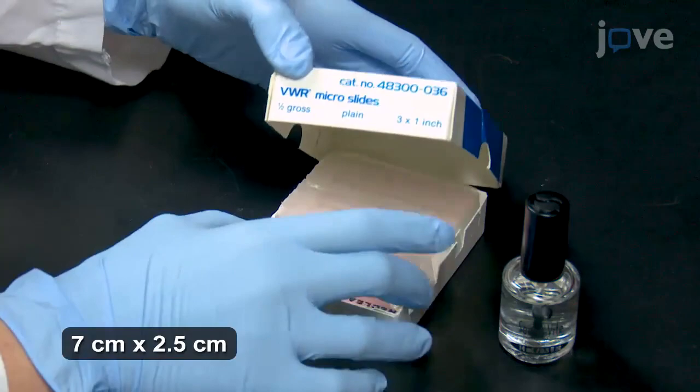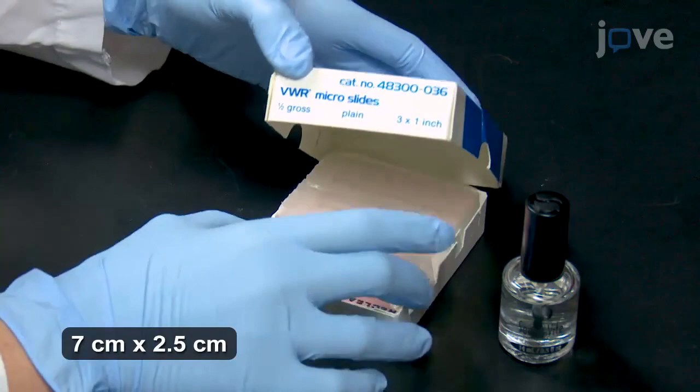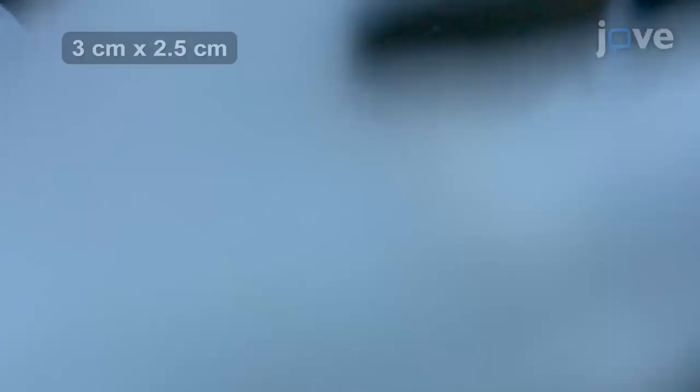For a slicing chamber, paint lines of nail polish onto a slide. Using clear nail polish, paint narrow lines to create a rectangle. Repaint the polish once when dry.